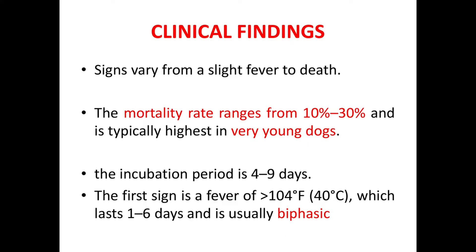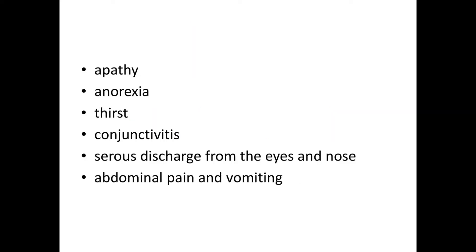Now let's see the clinical findings of ICH. Signs can vary from slight fever to death. The mortality rate ranges from 10 to 30% and is typically highest in very young dogs. The incubation period is around 4 to 9 days. The first sign is a fever of more than 104 degrees Fahrenheit, which lasts almost 1 to 6 days.